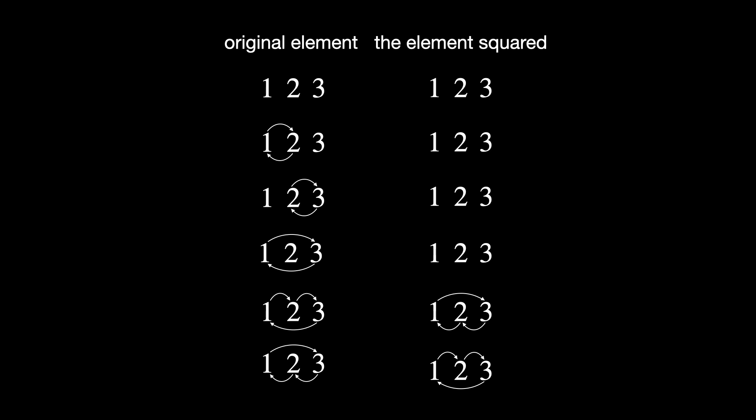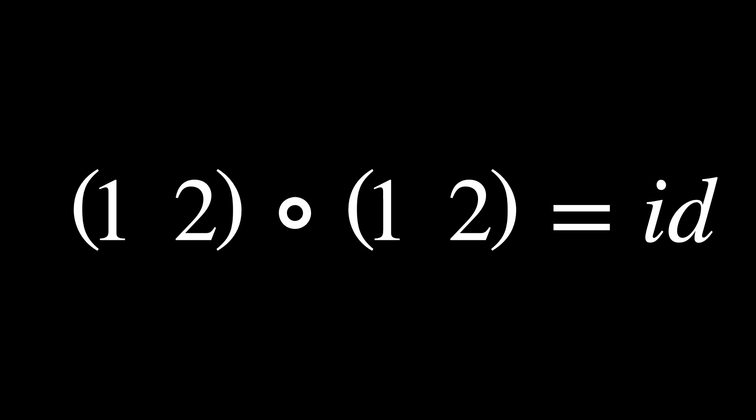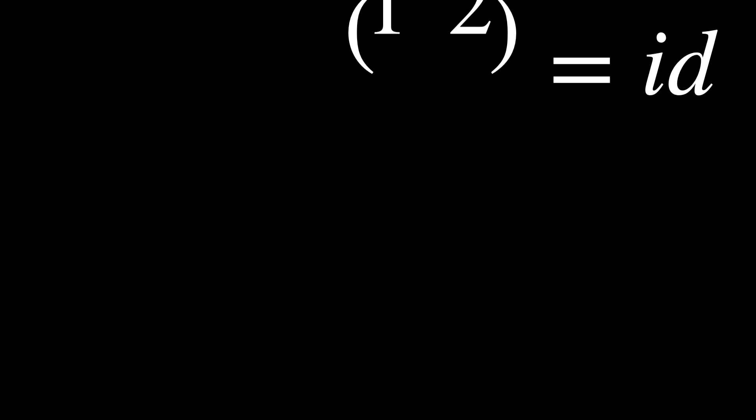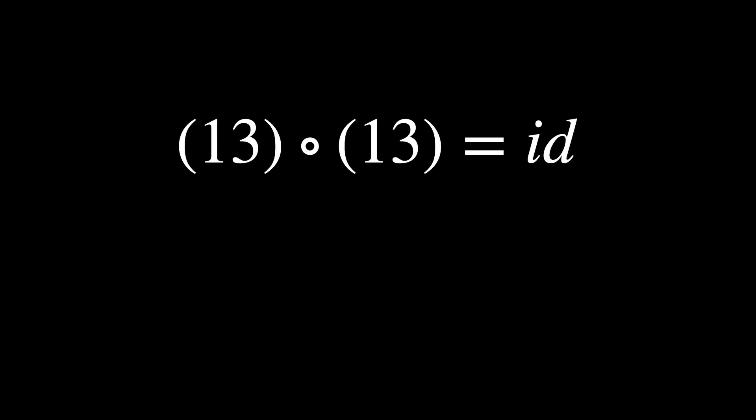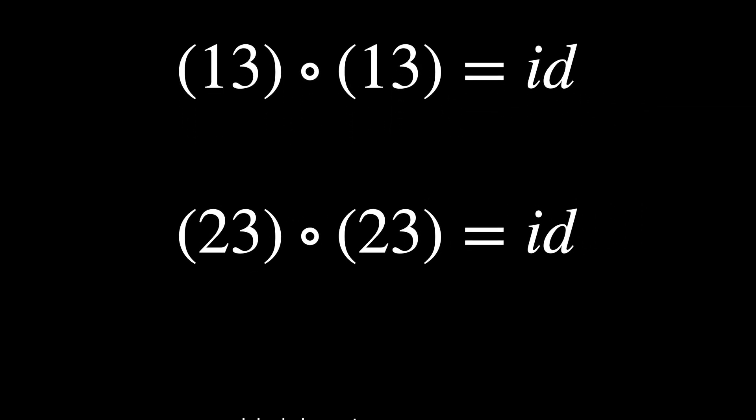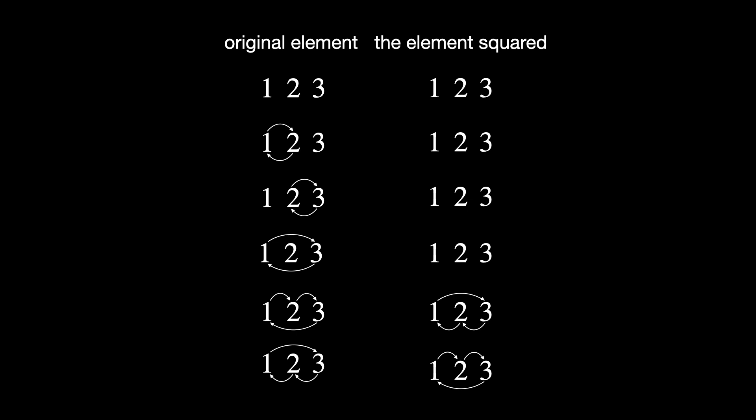Then we have two element swaps. Swap elements 1 and 2. Squaring it means 1, 2 times 1, 2, which equals the identity, because swapping twice undoes the swap. It is still the identity, so it is an odd permutation. Same goes for the second and third swap.